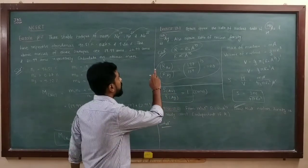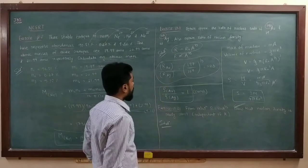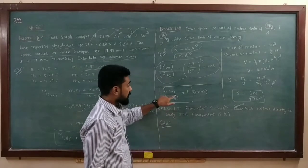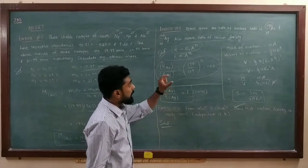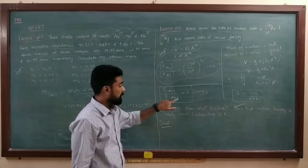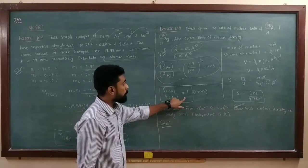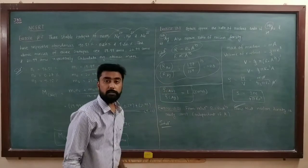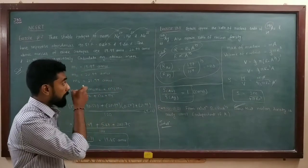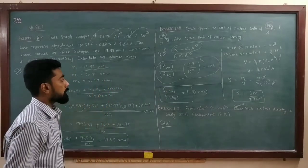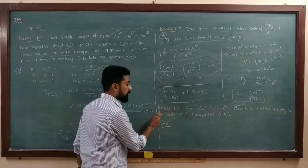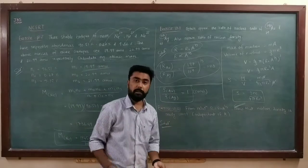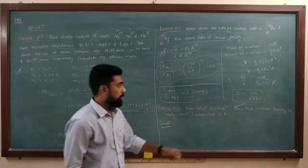So for exercise 13.11: the ratio of nuclear radii (Au to Ag) is 1.20, and the ratio of nuclear densities is 1. Exercise 13.21 further confirms from the relation R = R₀·A^(1/3) that nuclear density is nearly constant, meaning it is independent of A.